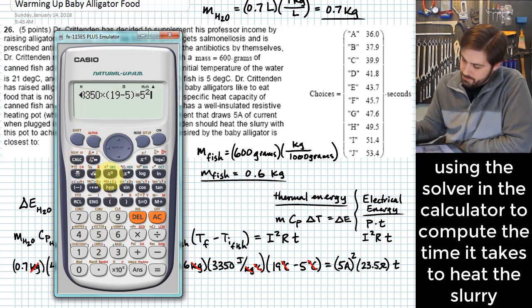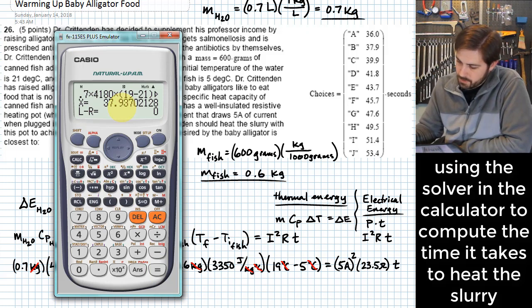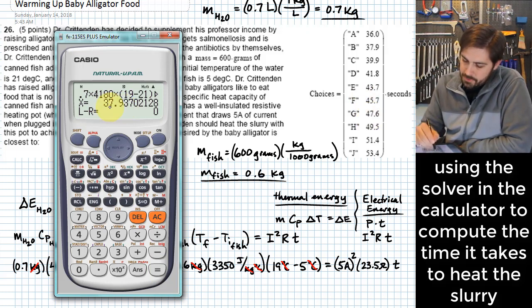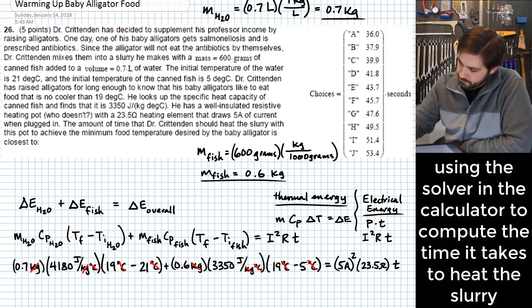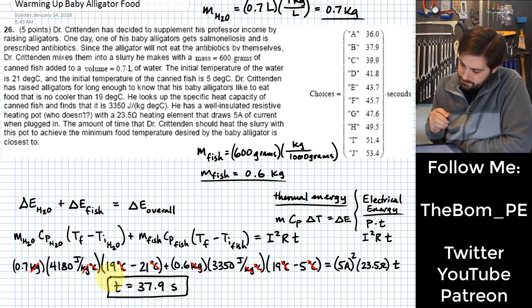5 squared times 23.5 times my variable x. So this I'm going to now solve for x, and that gives me 37.94. It looks like the answers are just one digit, so we'll just take 37.9 for my T. And that means I would pick B.